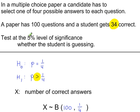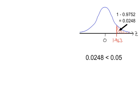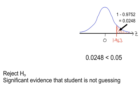We need to compare this probability with our significance level of 5%. 0.0248 is less than our significance level, 0.05, so the result is significant. So we reject H₀ and conclude that there is significant evidence that the student is not guessing.